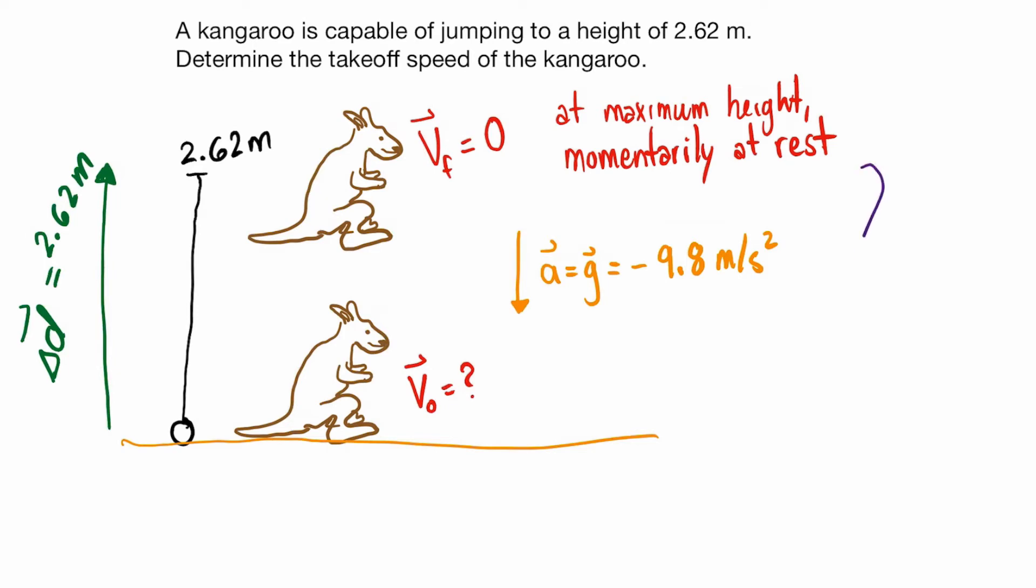And this whole motion took place during some time interval, delta t, and this they didn't give us, so we're going to leave it as an unknown. Wow, this diagram has so much information now, it's very easy to solve this question.